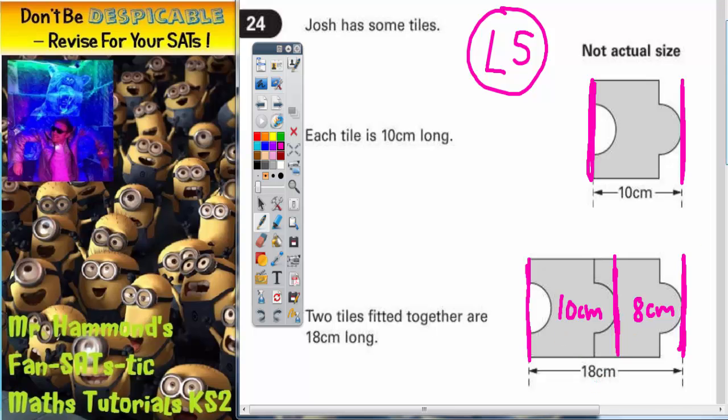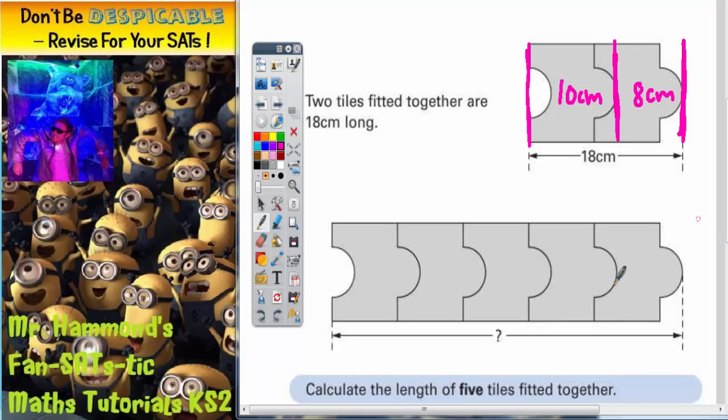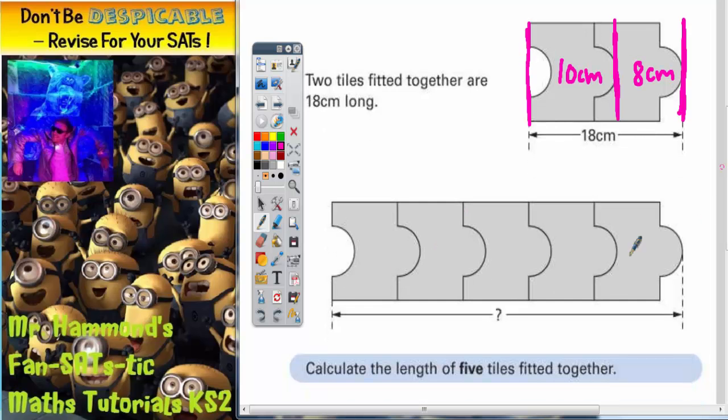Now we can use this idea on this diagram because we've now got to calculate the length of five tiles fitted together. So let's try the same strategy. Start from the start of the first tile to the end of the first tile, that's 10 centimeters.